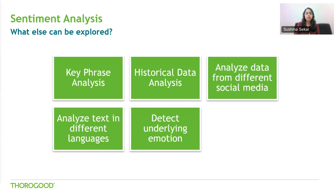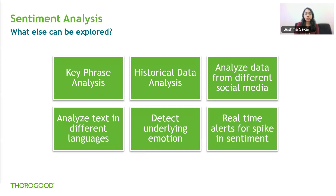If you identify that users are frustrated, you can pin it down — for example, users may not be happy with the user interface of your mobile app. You can also set up real-time alerts when there is a spike in mentions or sentiment and use key phrase analysis or emotion detection to understand contributing factors. Social media data analysis can help you be both proactive and reactive — proactively monitoring sentiment over time or reacting to a crisis, such as a commercial gone wrong.